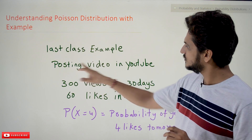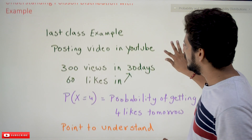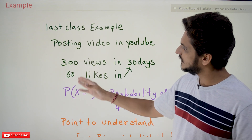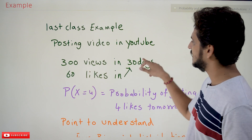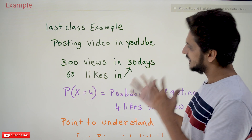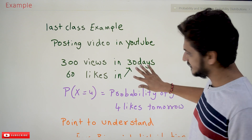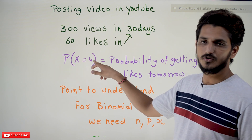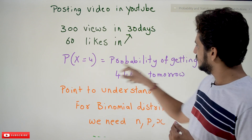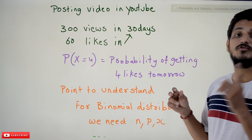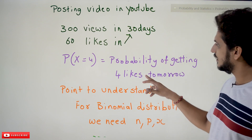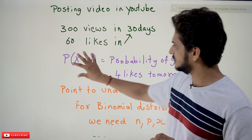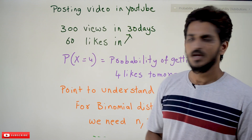In our last class, the data given was: you posted a video on YouTube, and after 30 days you observed 300 views and 60 likes in 30 days. The question asked was: what is the probability of X equals 4 — that is, what is the probability of getting 4 likes in one day? What is the chance you are going to get 4 likes tomorrow?